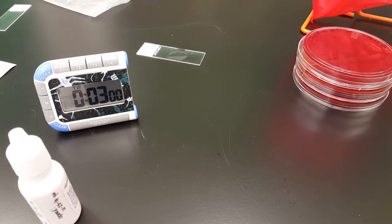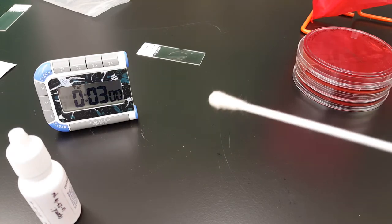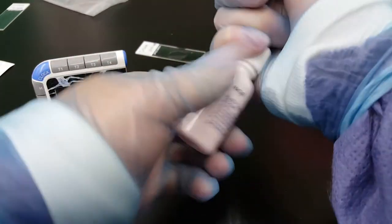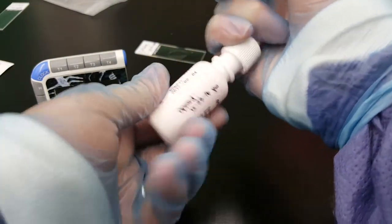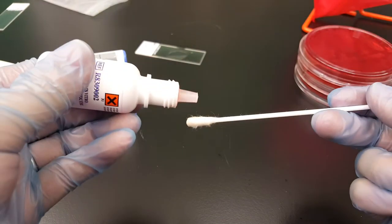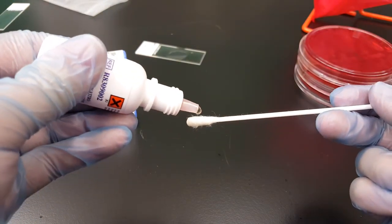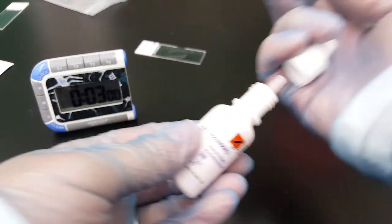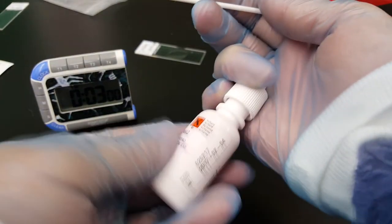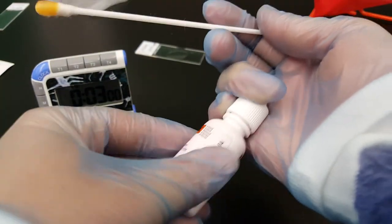Now we're going to do the indole. So we have our swab that we're getting ready. And we're going to put two to three drops of the spot indole reagent on there. So we can just touch the colony and look for a color change after one to three minutes.